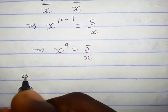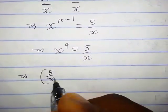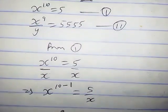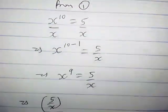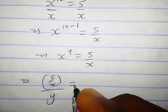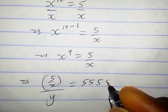So when we do that, we're gonna have 5 over x divided by y equals 5555.